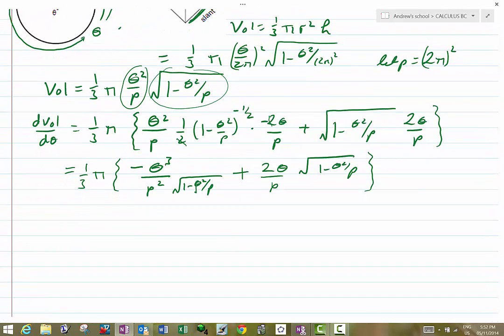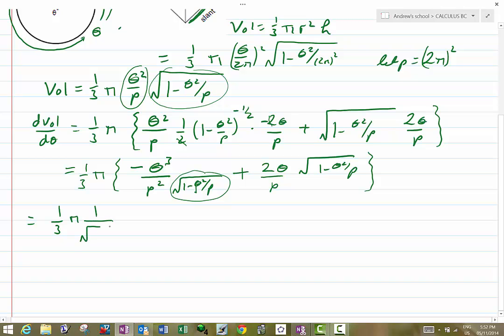The easiest way to deal with the square root is to take the denominator square root and pull it out as a multiplier at the front. In other words, I'll end up with 1 third pi times by 1 over the square root of 1 minus theta squared over p, and that simplifies the left-hand side.